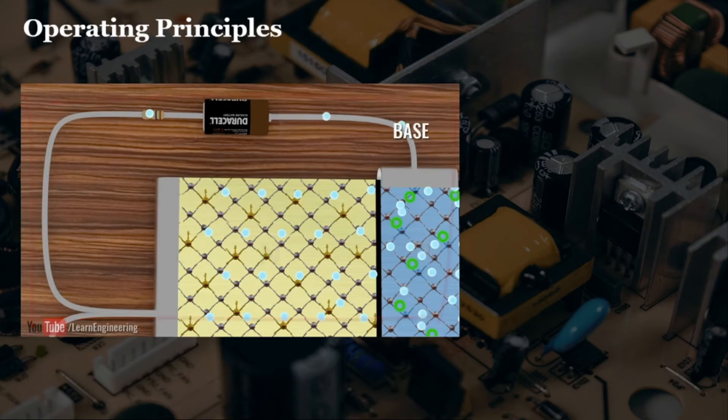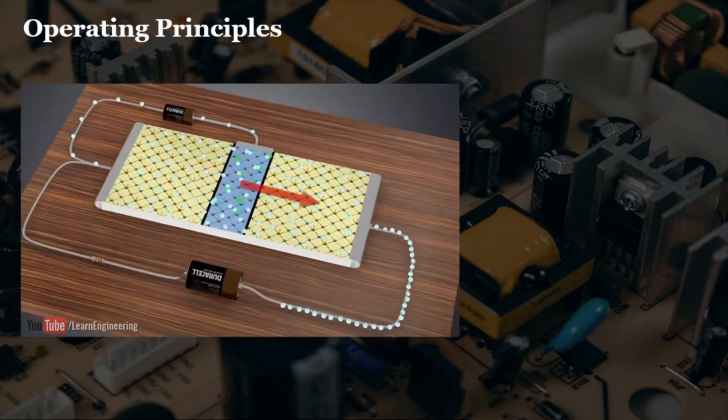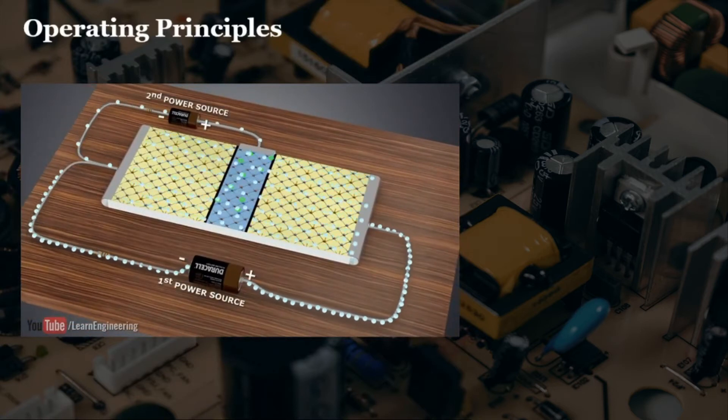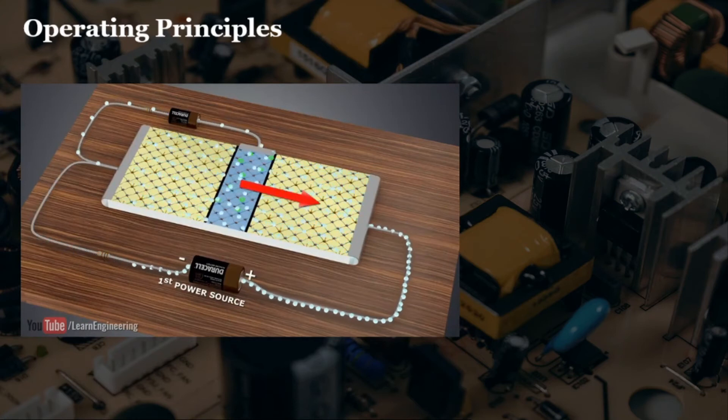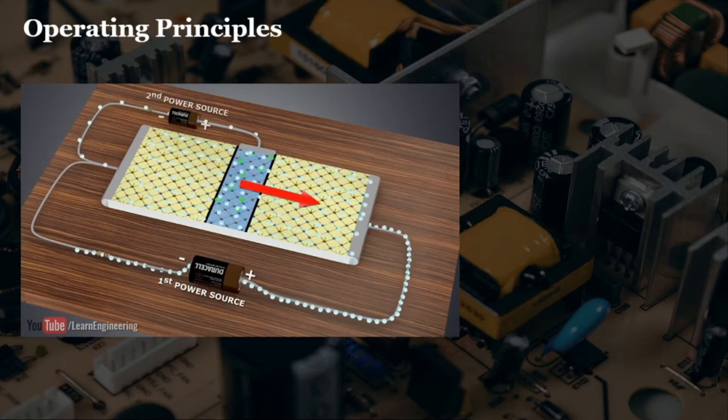It will be attracted so there will be minimal amount of current, but majority of the electrons will be collected by the collector terminal and will be attracted to the positive terminal of our second battery. That's the time there will be flow of electrons from emitter, base, then collector.